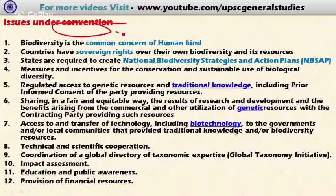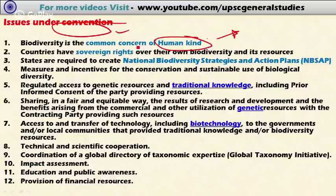The major issues decided under this convention include: biodiversity is the common concern of all humankind, not only a section of a country or part of the world. Countries have the sovereign right over their biological diversity — the right over biodiversity present within their territories — and they have the obligation to conserve it.